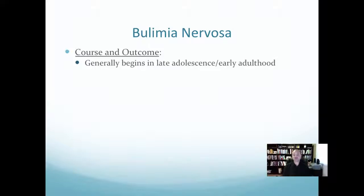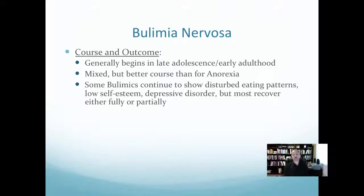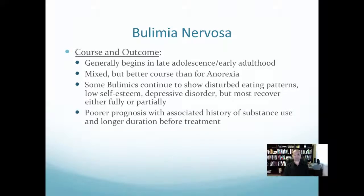Bulimia nervosa generally begins in late adolescence to early adulthood. Outcomes are mixed but better than anorexia — people tend to overcome bulimia much better, probably because anorexia involves a more draconian approach with a stronger fixation on the idealized body. Some bulimics continue to show disturbed eating patterns, low self-esteem, and depression, but most recover fully or partially. Treatment addresses not just the disorder but underlying causes like self-esteem issues and depression. A history of substance abuse indicates a poorer prognosis.